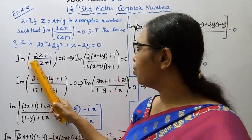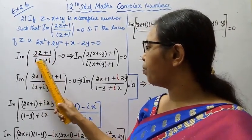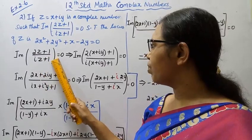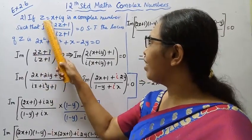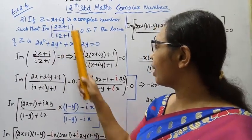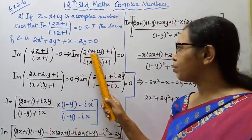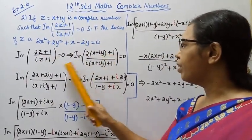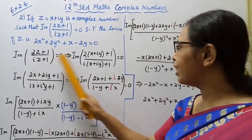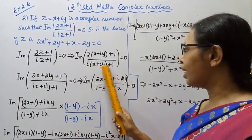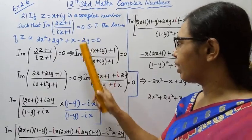Imaginary part of (2z plus 1) divided by (iz plus 1) equal to 0. Substituting z equals x plus iy: the numerator becomes 2(x plus iy) plus 1, and the denominator becomes i(x plus iy) plus 1, equal to 0.